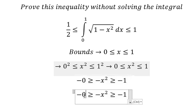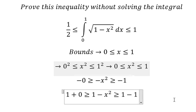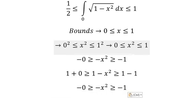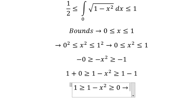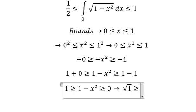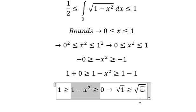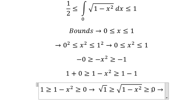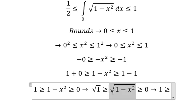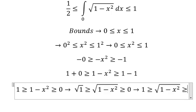Next, if we put number 1 for both sides, they will look like this, and then we put the square root for both sides. So we have that 1 is greater than or equal to this expression, and this one is always positive.